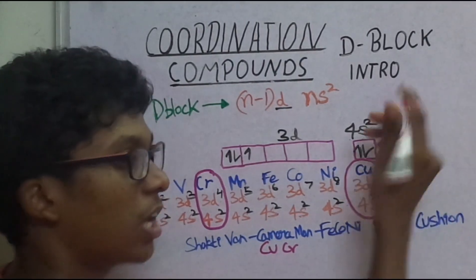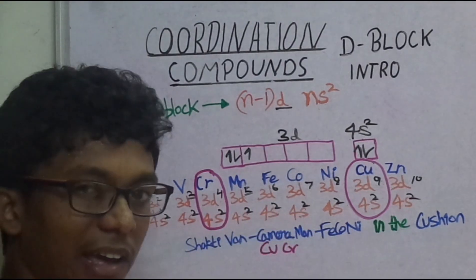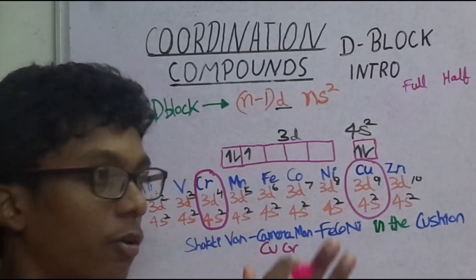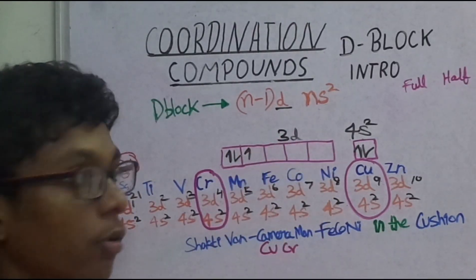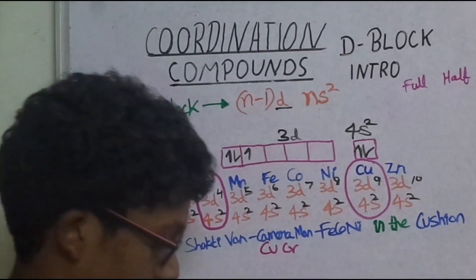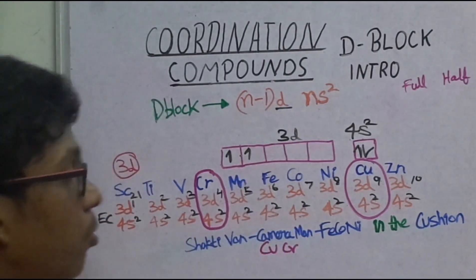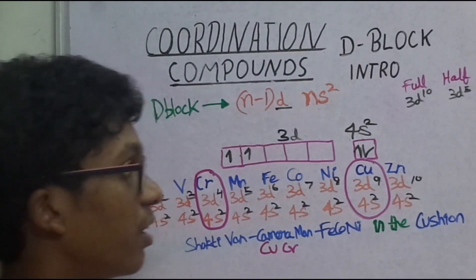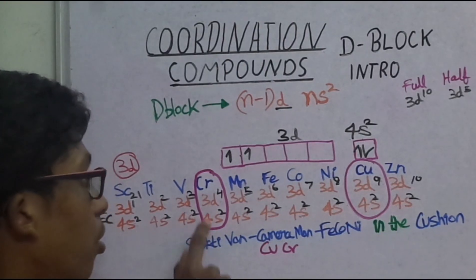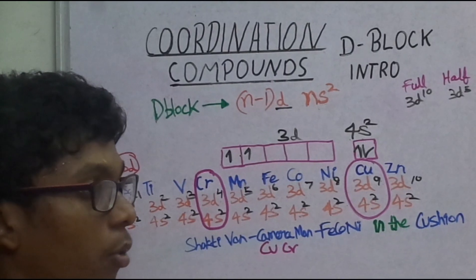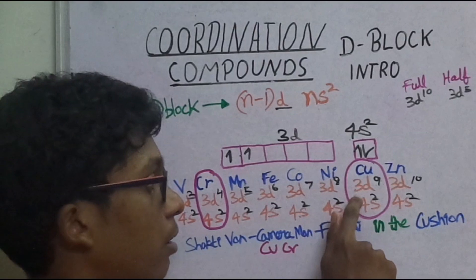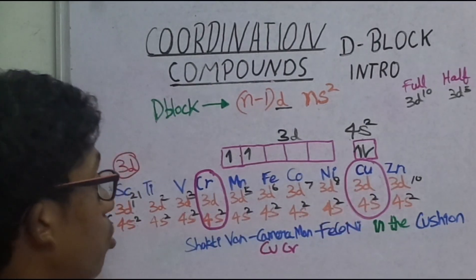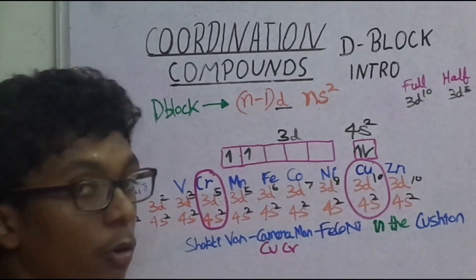The concept behind these exceptions is stability. Any configuration that is fully filled (3D10) or half-filled (3D5) is especially stable due to symmetry. Chromium would normally be 3D4, 4S2, but because 3D5 is half-filled and more stable, one electron jumps from 4S to 3D, giving 3D5, 4S1. Similarly, Copper would be 3D9 but jumps to 3D10 for full-fill stability, giving 3D10, 4S1.